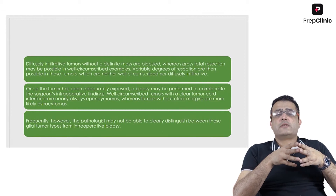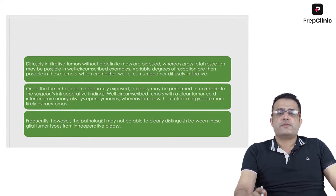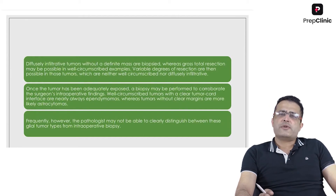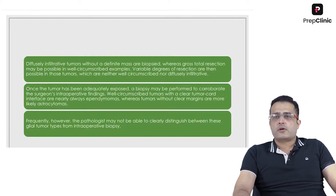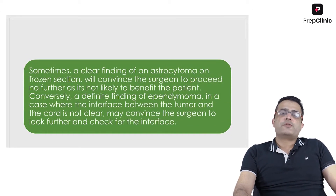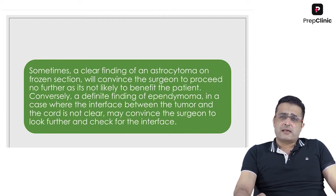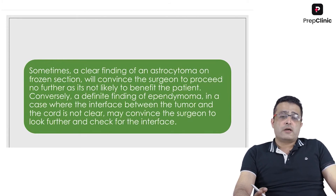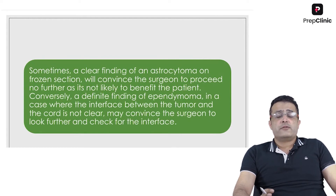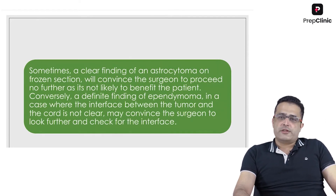The pathologist may not always be able to adequately distinguish between glial tumor types on the basis of intraoperative biopsy alone, and hence gross intraoperative findings are very important. If frozen section confirms astrocytoma, it will convince the surgeon to proceed no further, as it is unlikely to give significant benefit. Conversely, if a definite ependymoma is found where the interface is not yet clear, it may encourage the surgeon to look further and identify the dissection plane.